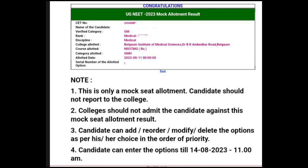So students, many of the students were allotted a medical seat. So I will show you one example on the screen. This is the allotted seat for a candidate — it will be given like this. UG NEET 2023 mock allotment result. CET number will be given, and then name of the candidate, verified category, your category GM, then rank, and then discipline — Medical.